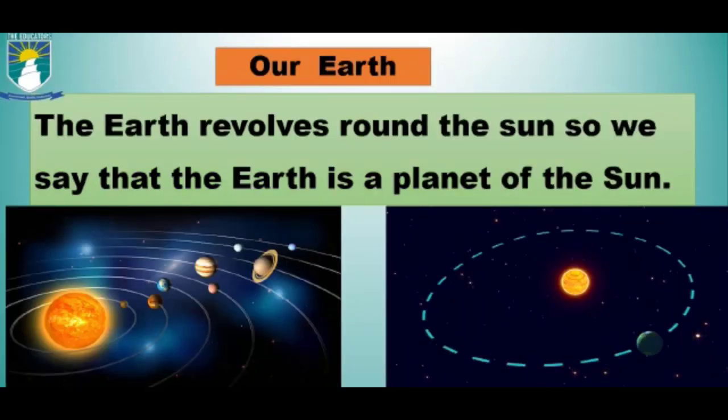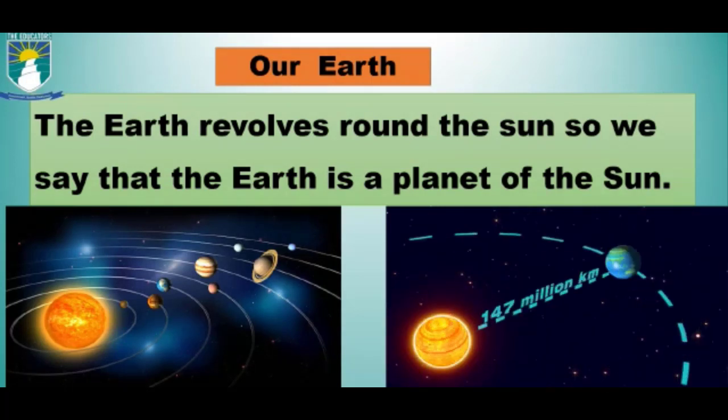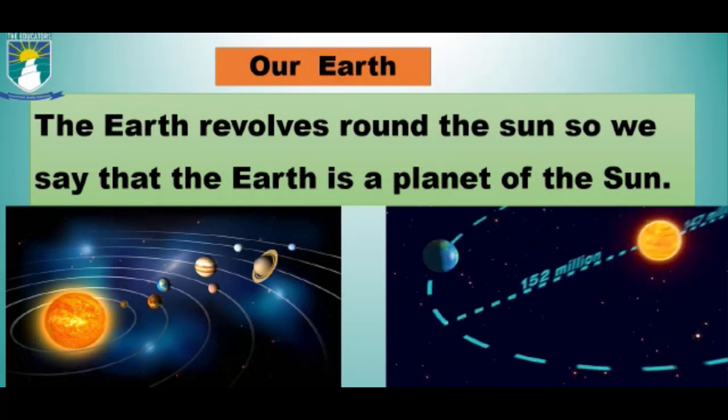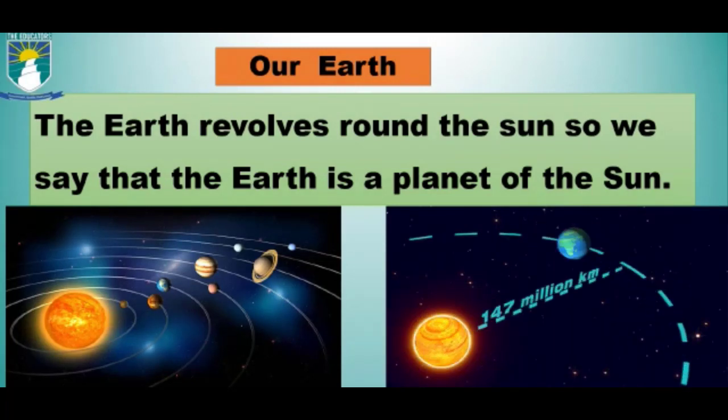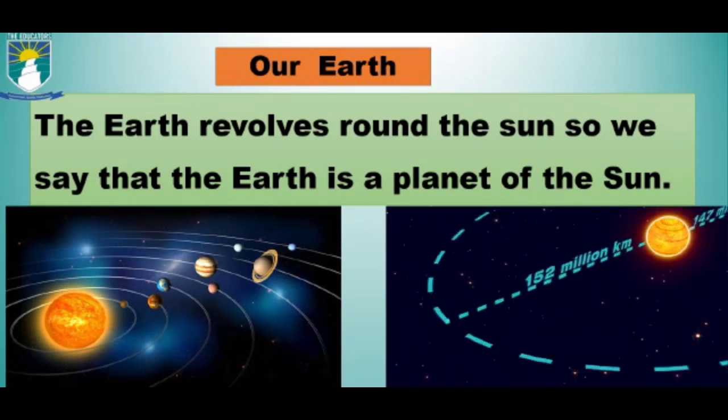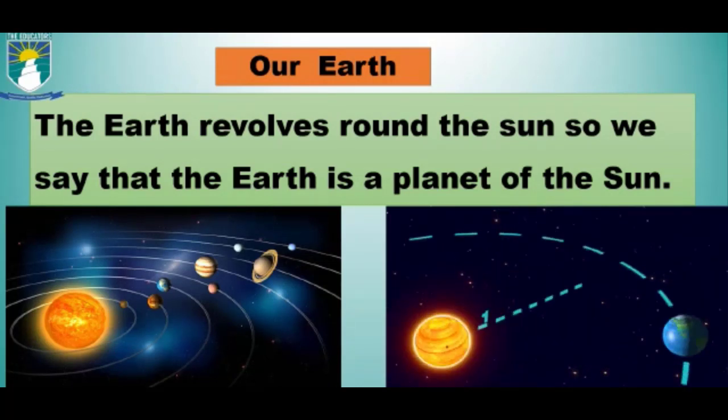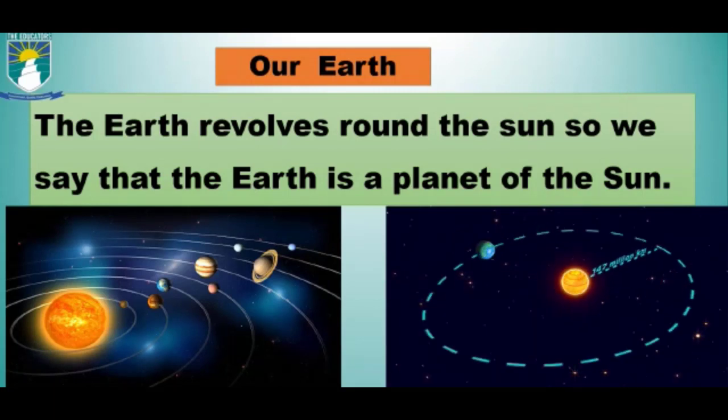The earth revolves around the sun, so we say that the Earth is a planet of the sun. The sun is a star, a big ball of fire. The Earth is a planet in the solar system. Like all the planets, Earth travels around the sun.